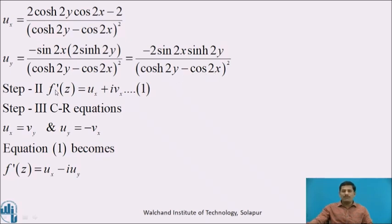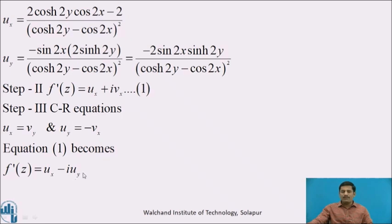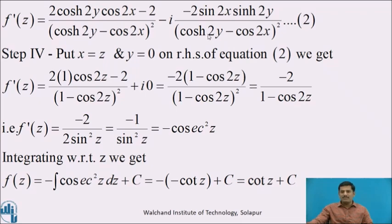Using the formula for the derivative f'(z) = ux + i·vx — call this equation 1 — vx is not known to us, so we use the CR equations: ux = vy and uy = -vx. The second result is useful: we replace vx with -uy. Therefore equation 1 becomes f'(z) = ux - i·uy. We know the expressions for ux and uy, so after substituting them we obtain equation 2.